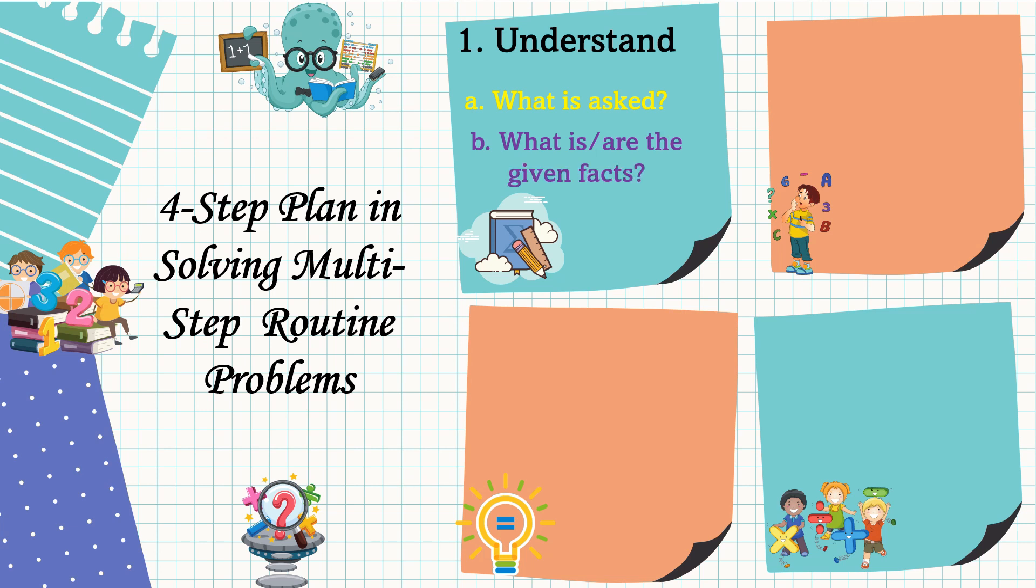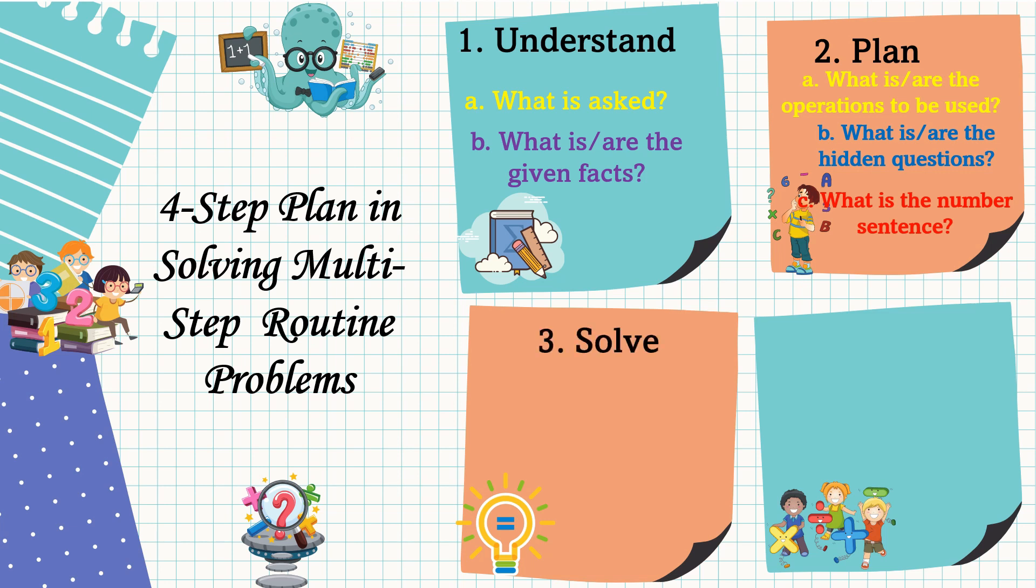Second, formulate a plan. In planning, consider the following: what is or are the operations to be used, what is or are the hidden questions, and what is the number sentence. The third step is we're going to carry out the plan. Let's solve the problem. In solving, show your solution and label the answer.